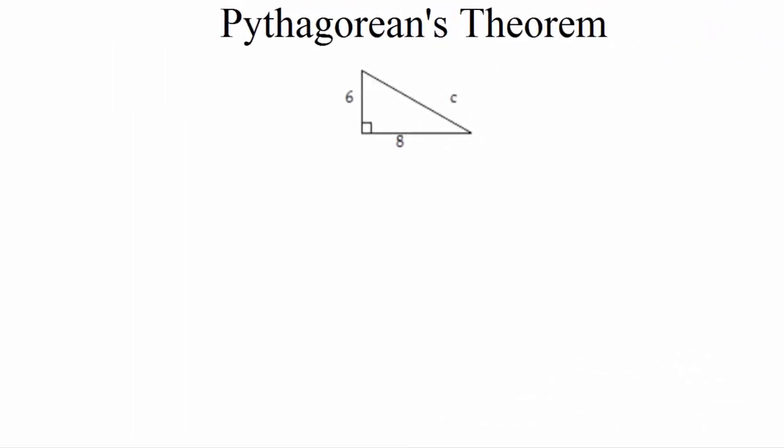This video is going to cover how to find the unknown side of a right triangle. The way we do that is by using the Pythagorean theorem, which is one of the most famous theorems in math. This theorem only applies when you have a right triangle — either the instructions must state it's a right triangle, or you need that little square in the corner of the triangle, like we have here, to signify it.